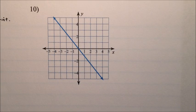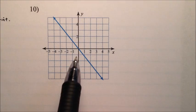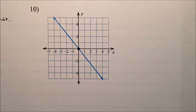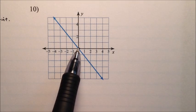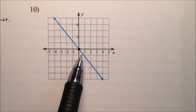In number 10, we're given another line. We need to find the y-intercept, which looks like it's going right through the origin. And we need to find the slope, so we need to find some other points where it looks like it's crossing really nicely.